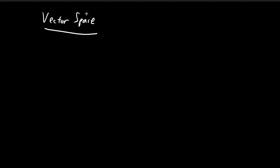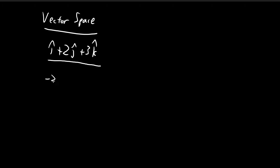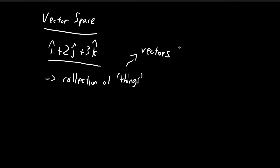When we talk about vectors, the first thing that comes to mind are the Euclidean vectors that we encounter in classical mechanics. However, in linear algebra, the concept of a vector is actually much broader than this. A vector space is simply a collection of things, and for these things we give them a very fancy name — we call them vectors. So vectors can actually come in many different forms; they don't have to be Euclidean vectors.